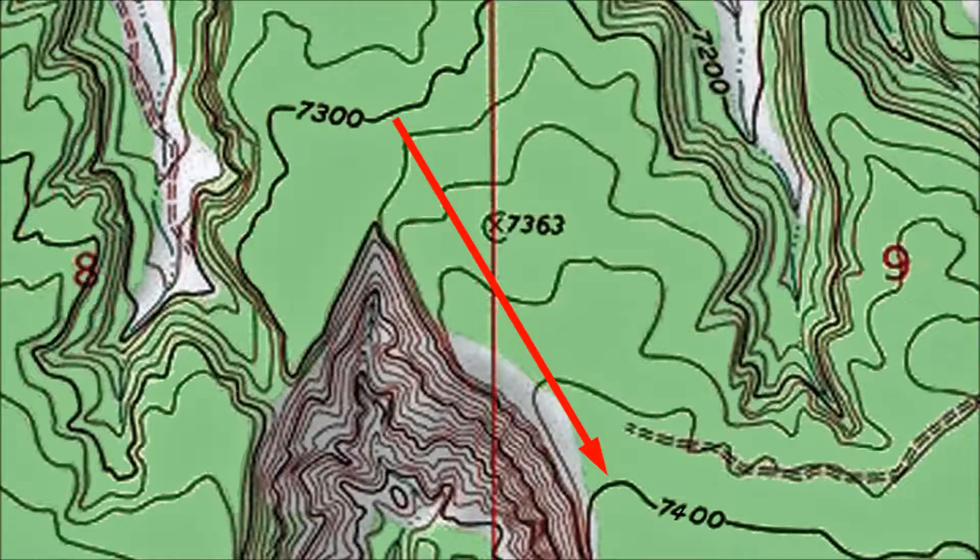In practical terms your absolute elevation is less of a concern than how much you'll go up or down during the next part of your hike. Contour lines can provide that information.